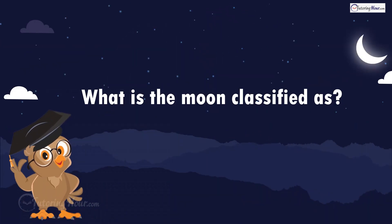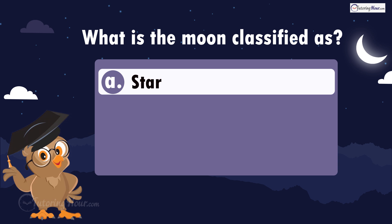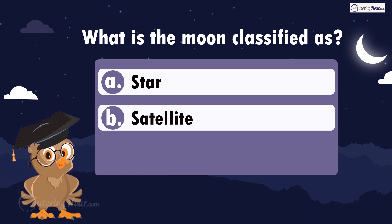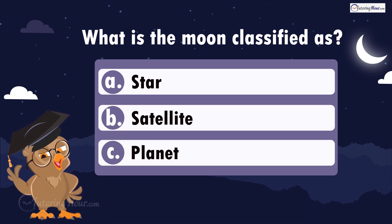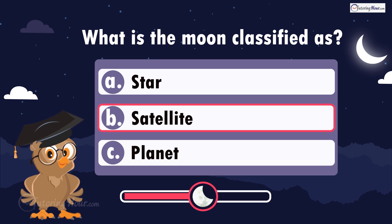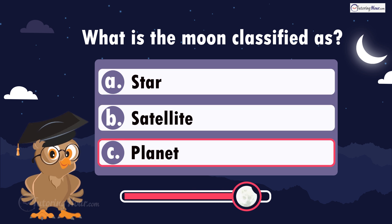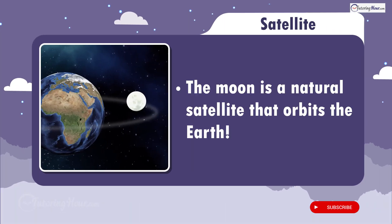What is the moon classified as? Is it A, star; B, satellite; or C, planet? The correct answer is satellite. The moon is a natural satellite that orbits the Earth.